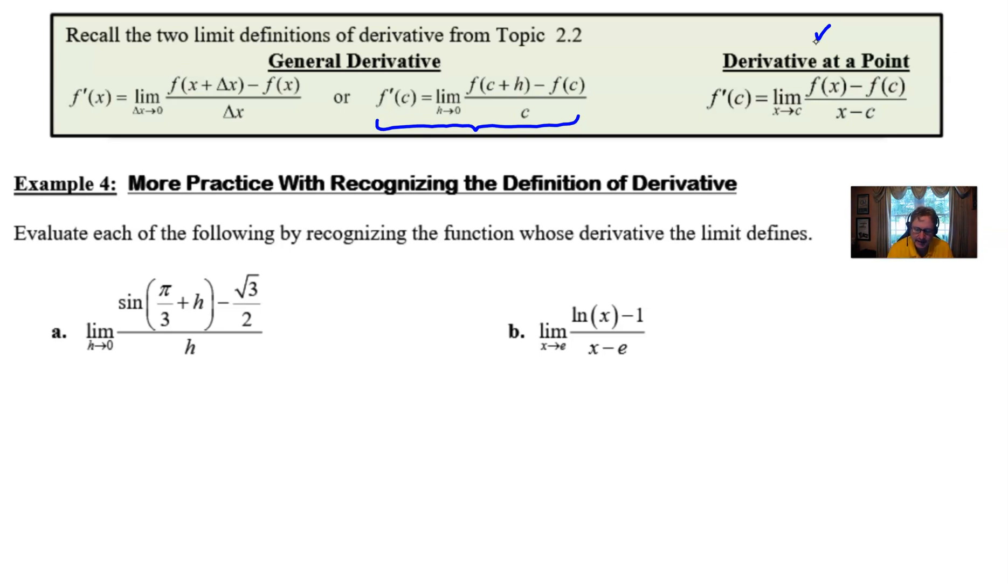The question says, evaluate each of the following by recognizing the function whose derivative the limit defines. And if you're a student of mine, we did some problems not too long ago that dealt with this, and we're just going to revisit this idea, but just take it up to a next level. Basically what we want to do is, as we read this first limit as h approaches zero of the sine of pi over three plus h minus radical three over two over h, we want to recognize which of these three limit definitions does this most look like. We could probably rule out the first one for a couple of reasons. We don't see delta x, and instead we see h.